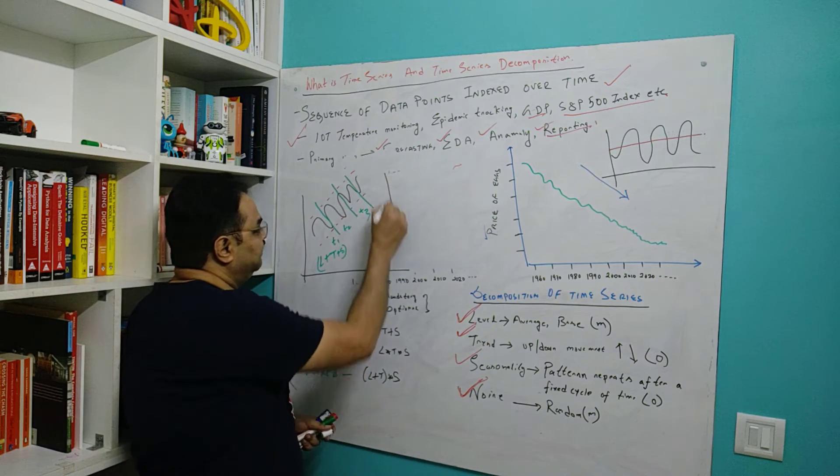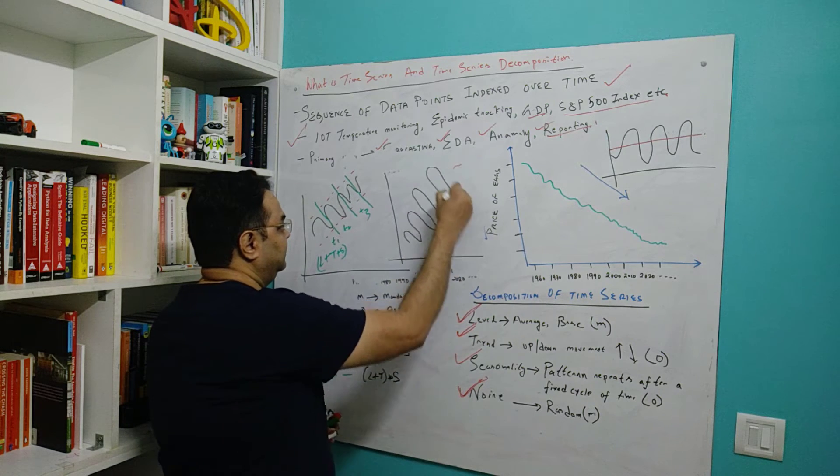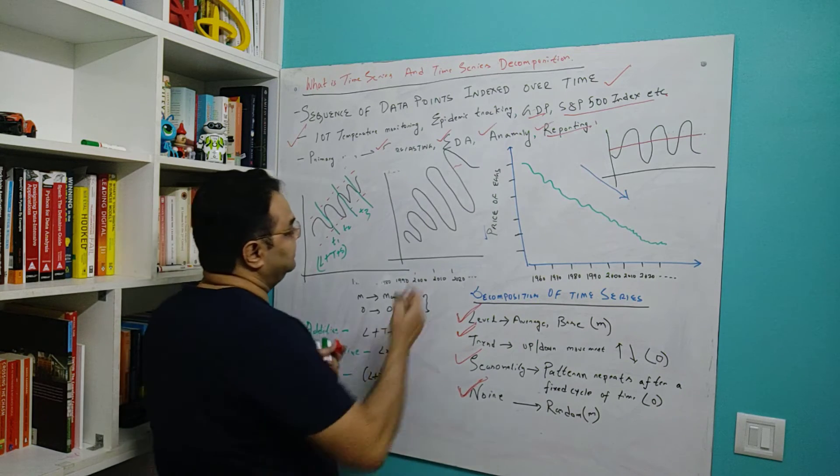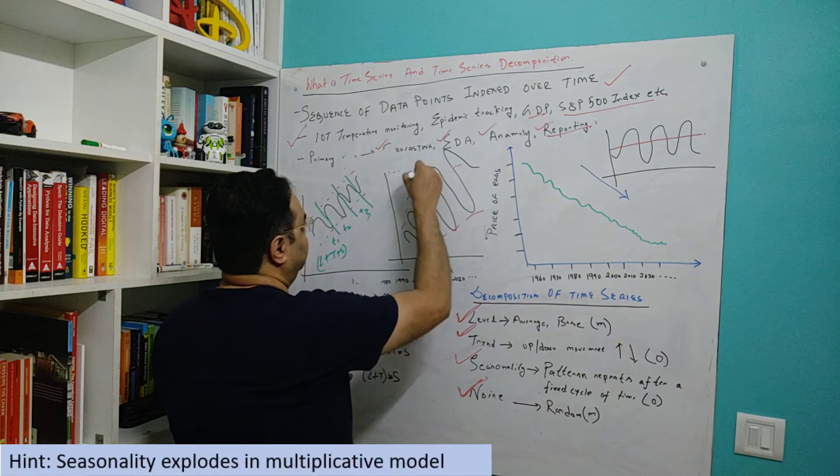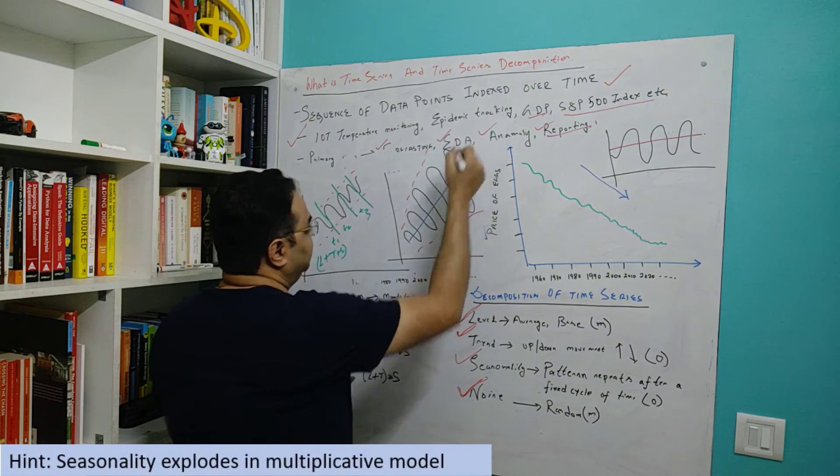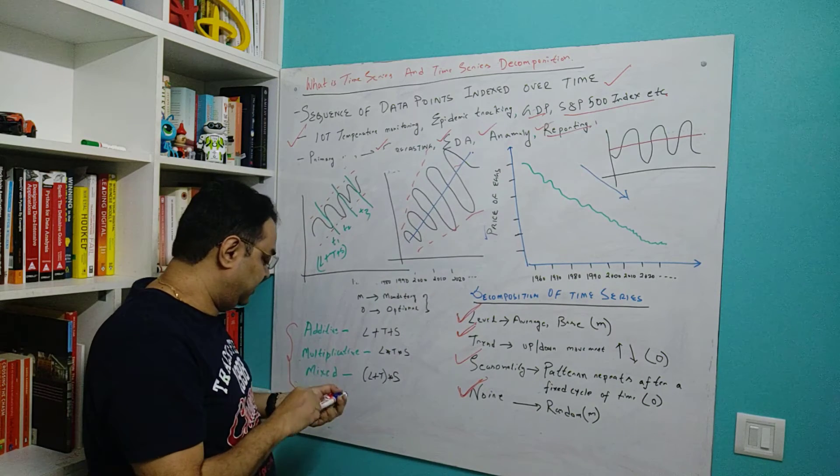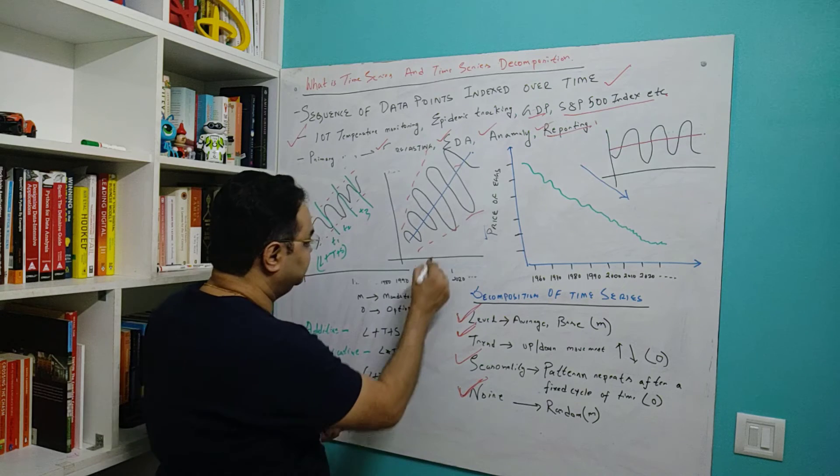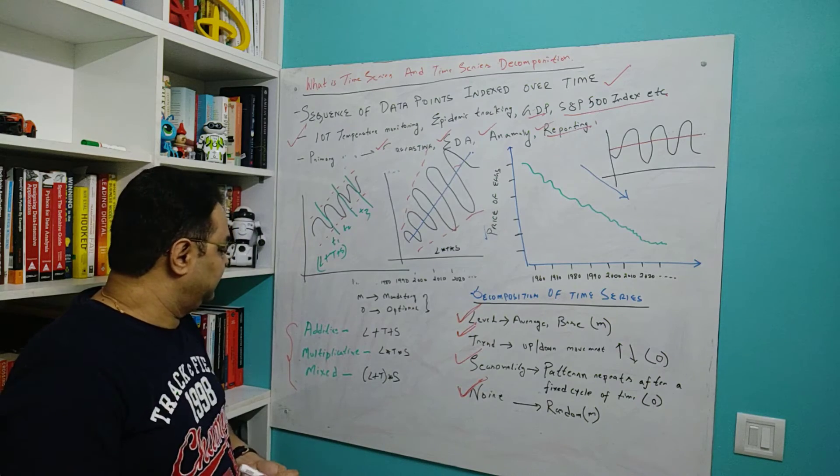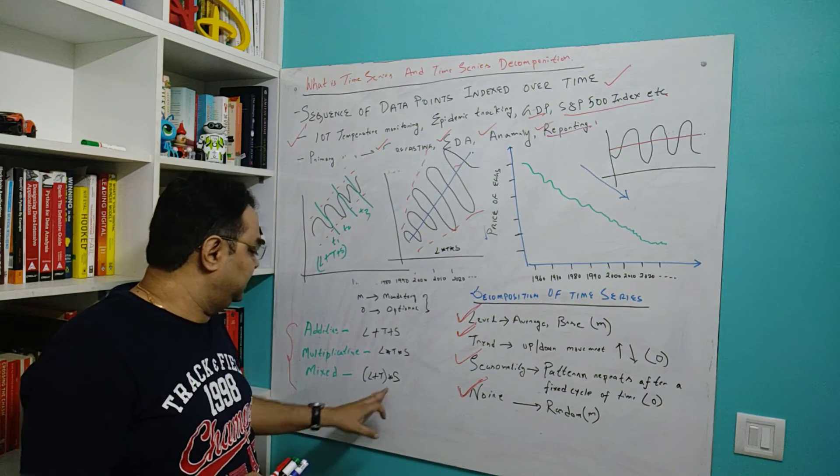On the contrary, you can also have time series which are multiplicative, in which the seasonality is actually spreading out. It is multiplicative in nature. Such a model, or multiplicative model, is when you have it as level into trend into seasonality. There is also a case which is mixed in nature, and this is more practical.